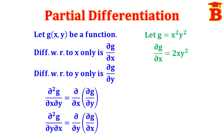Again, differentiating ∂g/∂x with respect to x gives the second derivative, denoted ∂²g/∂x². So differentiating 2x·y² partially with respect to x: we have the x term here, differentiation of x is 1. Writing the constants: 1 into 2 is 2, and y² is also constant, so we write 2y². Therefore ∂²g/∂x² equals 2y².